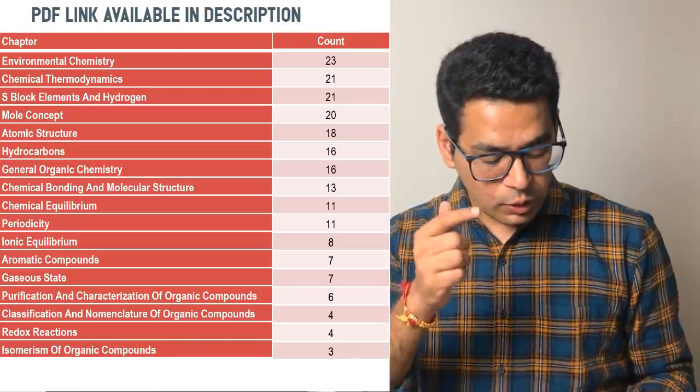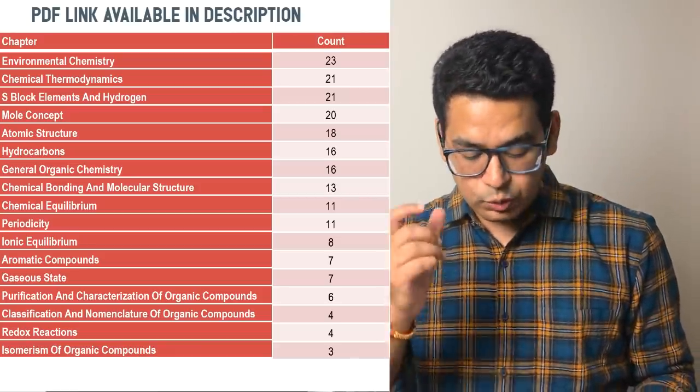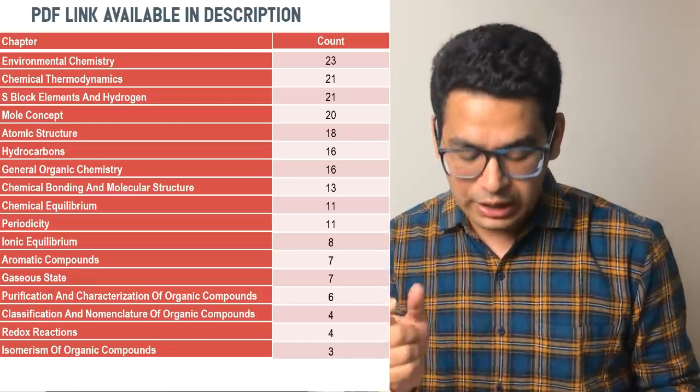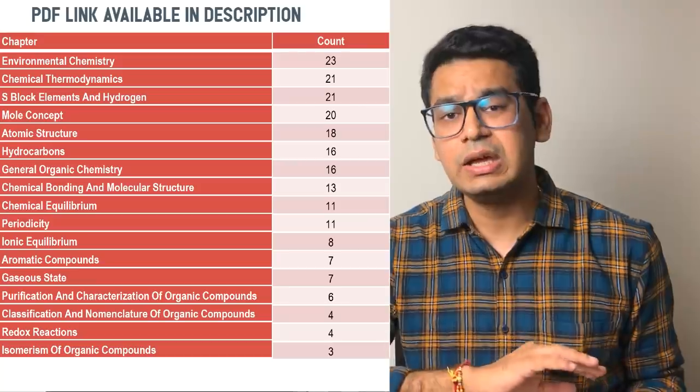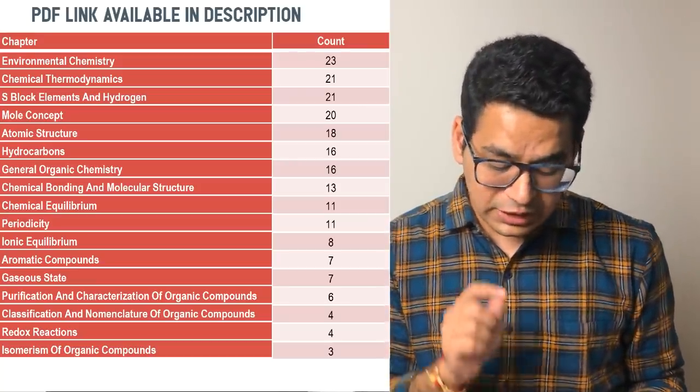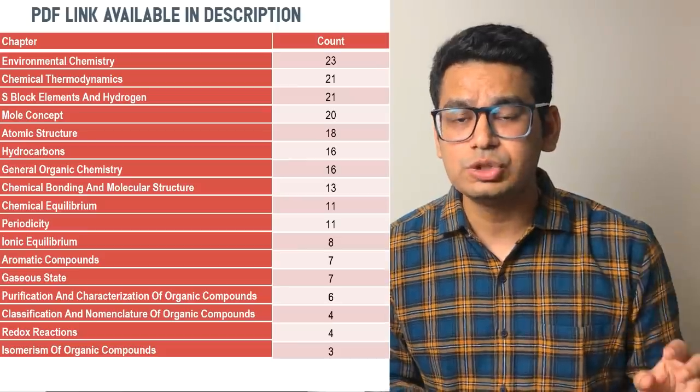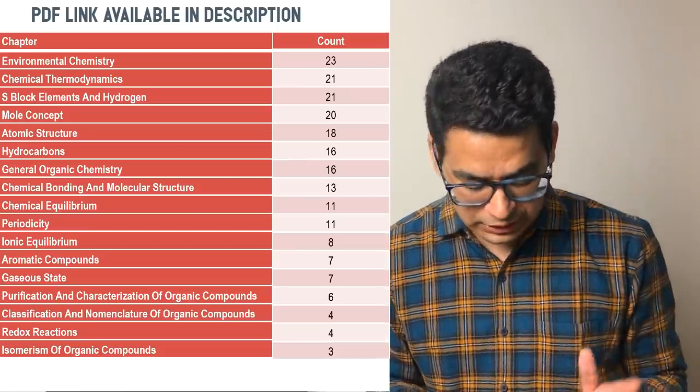S-block, again if you notice, all the topics are equally distributed. Inorganic chemistry S-block - 21 times it was asked, S-block and Hydrogen. So generally we leave S-block and Hydrogen, we give priority to class 12th inorganic, but you can see that 21 questions came from these two chapters. That means one question is fixed again from these two things.